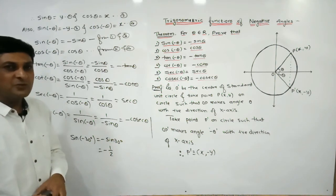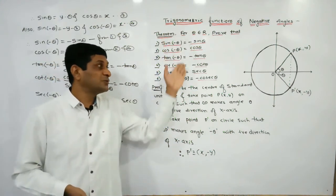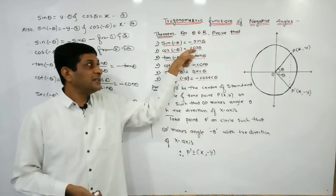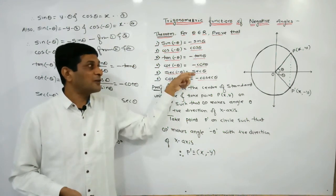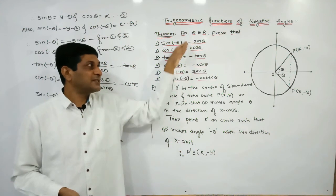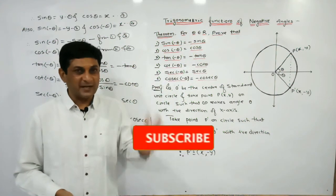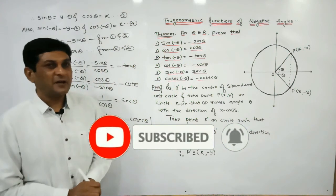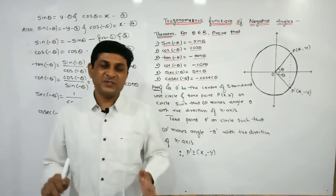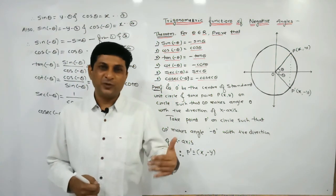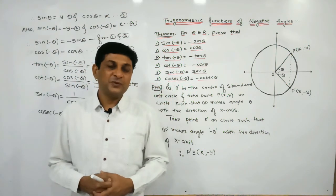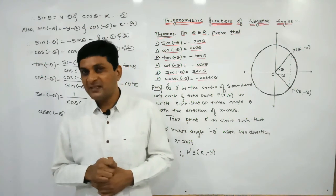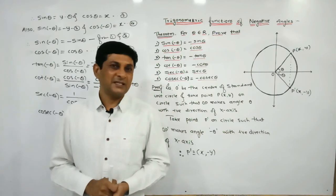To find the values of trigonometric ratios of negative angles, you should know these important results. Note that cos and sec give positive values, while the remaining four functions give a negative sign. Remember these formulas. In the next video, we will solve examples from exercise 1 and also discuss how to find values of trigonometric ratios of various angles. Thank you.